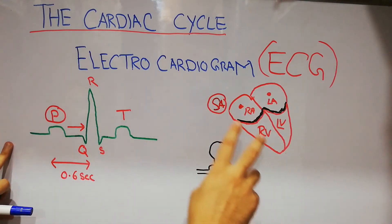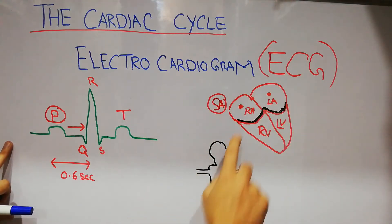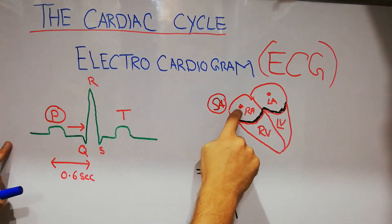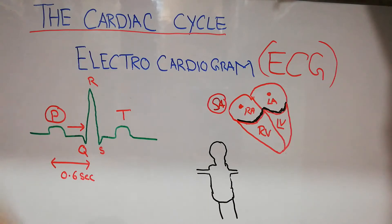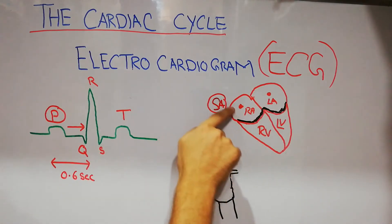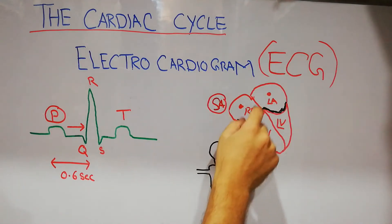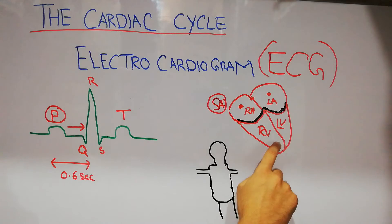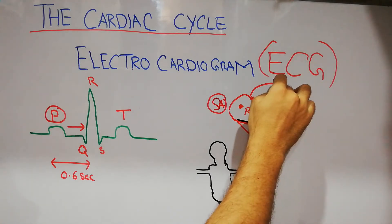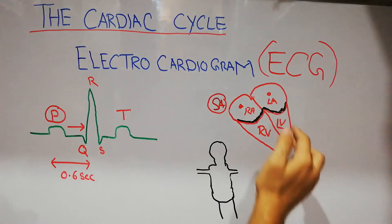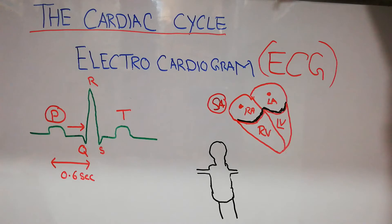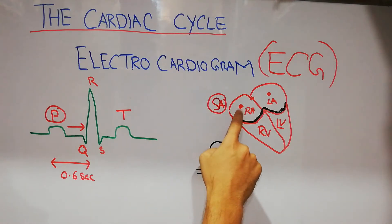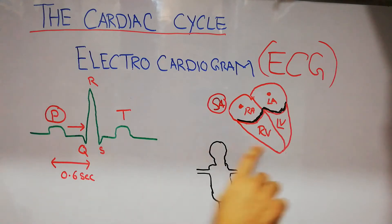The heart is made of four chambers: two atria and two ventricles — right atrium, left atrium, right ventricle, left ventricle. The cardiac cycle starts with inflow of blood into the right and left atrium, then contraction of the atria pushing blood into the ventricles. The right ventricle pushes blood into the lungs where it gets oxygenated, and oxygenated blood returns to the left atrium, which pumps it into the left ventricle, which then pumps it to the whole body.